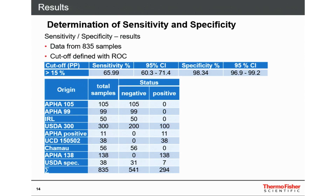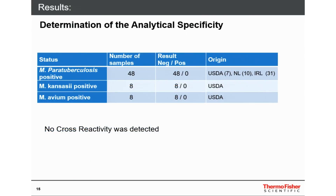We also determined cross-reactivity to different mycobacteria. We tested cross-reactivity to M. paratuberculosis, M. kansasii-positive, and M. avium-positive samples. We had 48 M. paratuberculosis positive samples from the USA, Netherlands, and Ireland; 8 M. kansasii positive samples; and 8 M. avium positive samples. We determined no cross-reactivity to any of these different antigens.